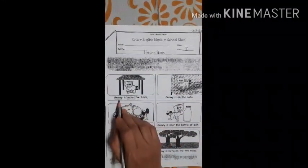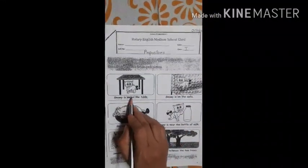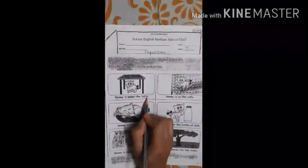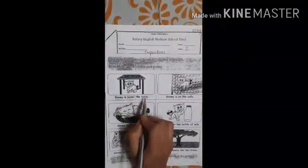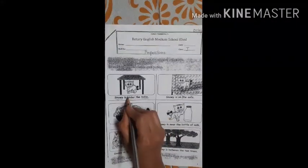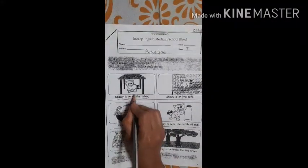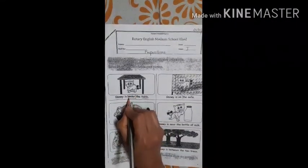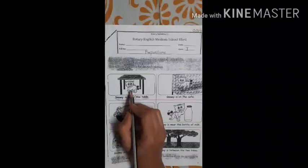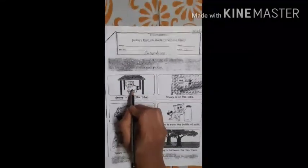Read what is written below each picture. So let's see — Snowy is under the table. So Snowy and table are nouns, and here 'under' is a preposition. So you can see Snowy is under the table.